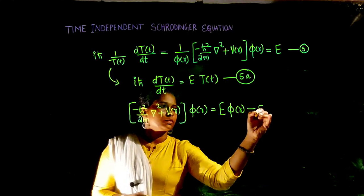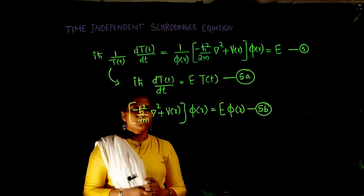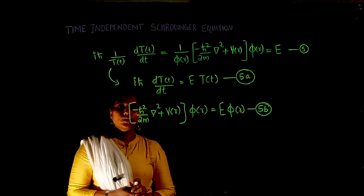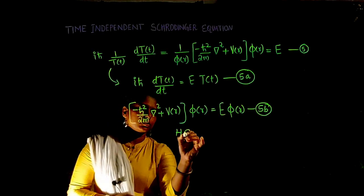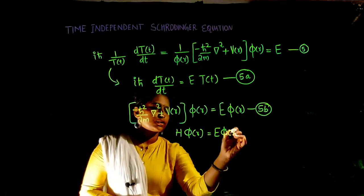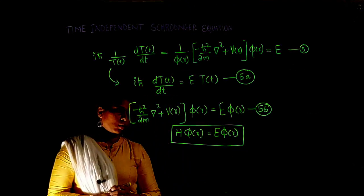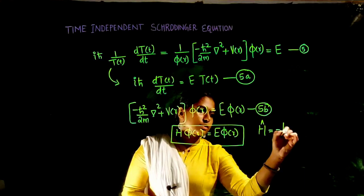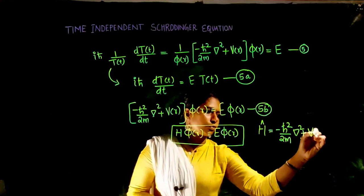From equation 5 we have obtained two different equations. Equation 5B is the eigenvalue equation for the energy operator, written as H · φ(r) = E · φ(r), where the Hamiltonian H is given by −ħ²/2m ∇² + V(r).